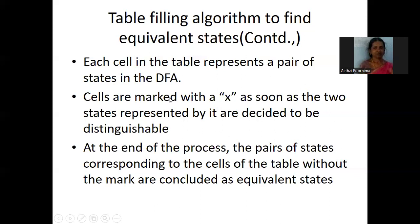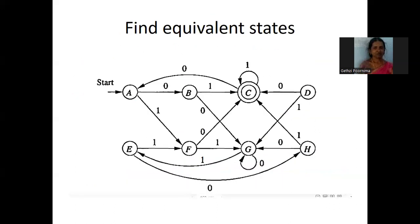Each column should be named after the states starting from the first state till the (n-1)th state, and rows should be named starting from the second state till the nth state. We need to eliminate the duplicate cells. Each cell in the table represents a pair of states in the DFA. We are going to mark the cell with X whenever we see a pair of distinguishable (non-equivalent) states.